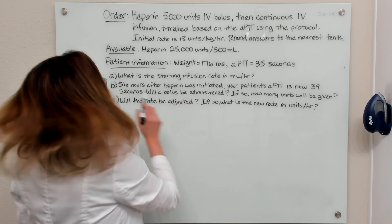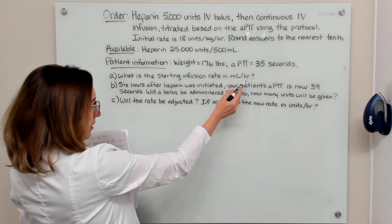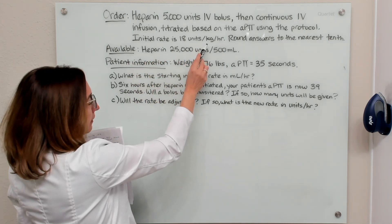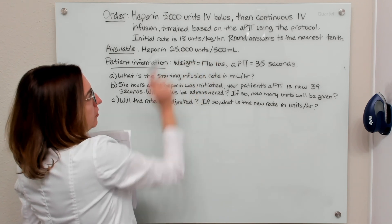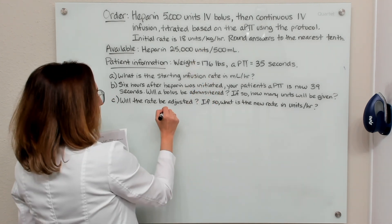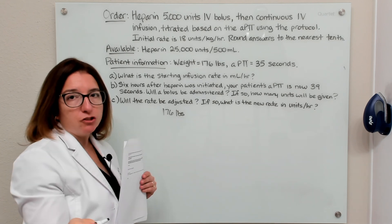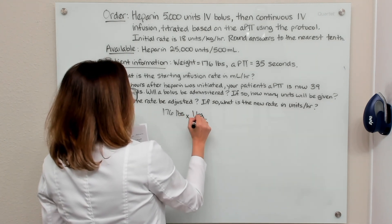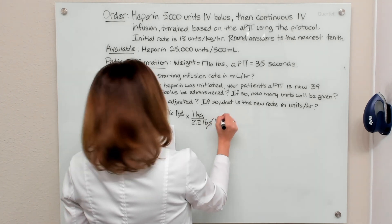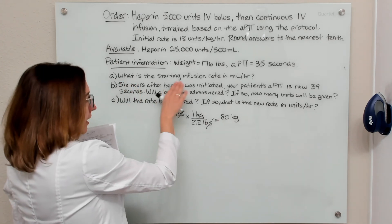Part A asks us: what is the starting infusion rate in milliliters per hour? The initial rate is ordered in units per kilogram per hour, so we need the patient's weight in kilograms. Taking 176 pounds and dividing by 2.2 gives us 80 kilograms. That is the patient's weight in kilograms, and now we can solve the problem.